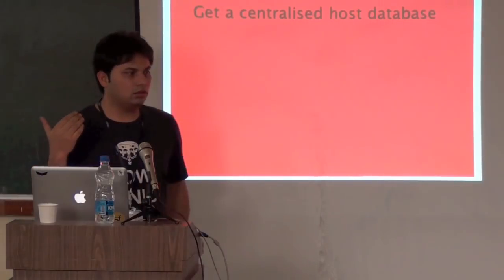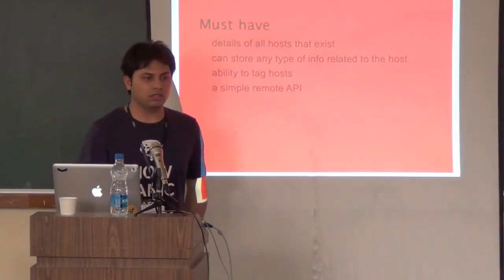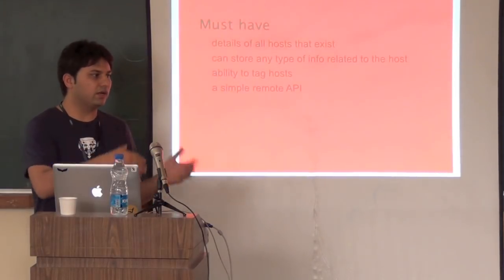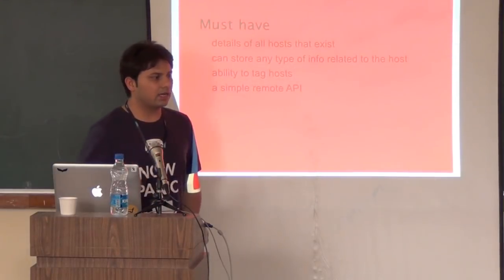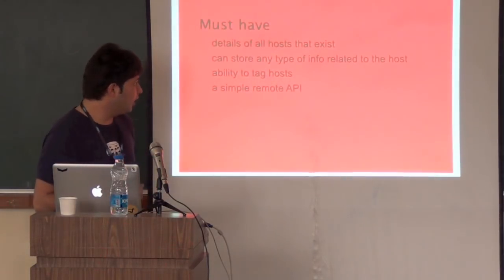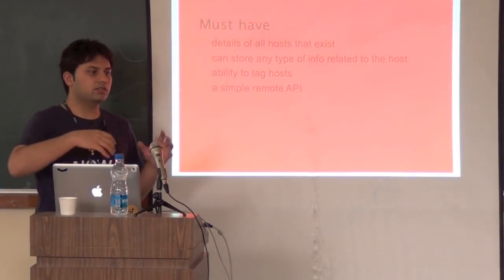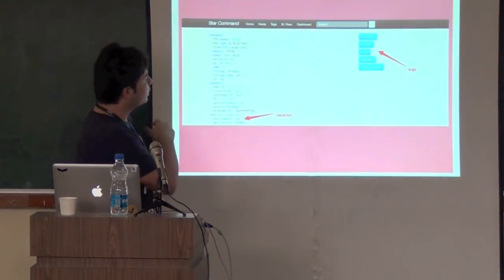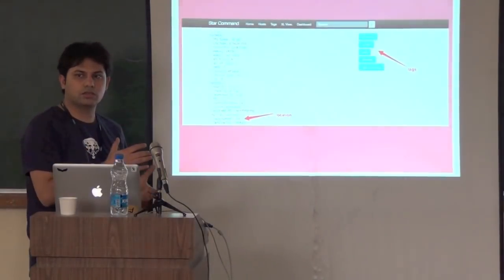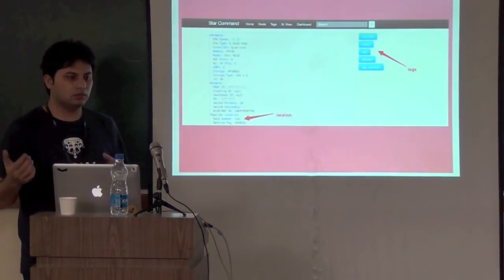The host DB is very important because it lets you keep all the details of machines in one place. It should allow you to store any sort of data without limitations — you can randomly store whatever you want. It should allow you to tag hosts, because tagging lets you sort and organize them in various ways, which becomes extremely handy. It should also have an API, because we are able to write individual components that talk to it because there is an API. All physical hosts and all virtual machines go into the same database.